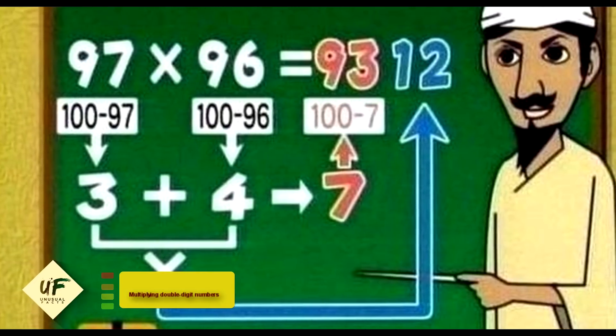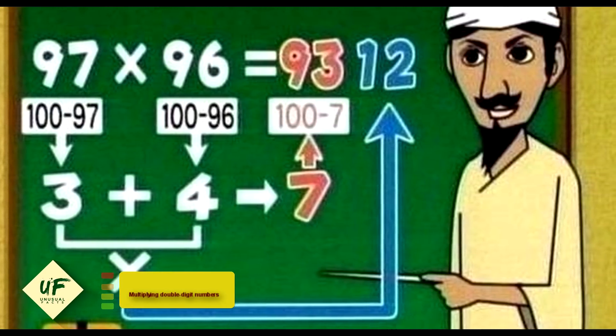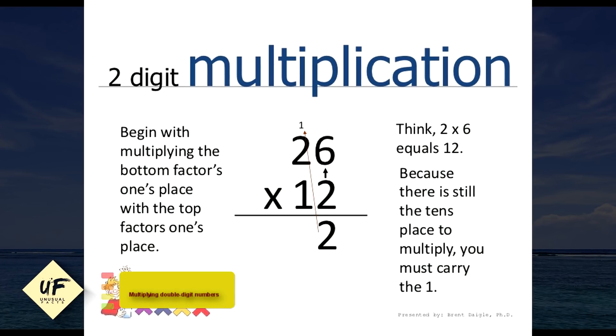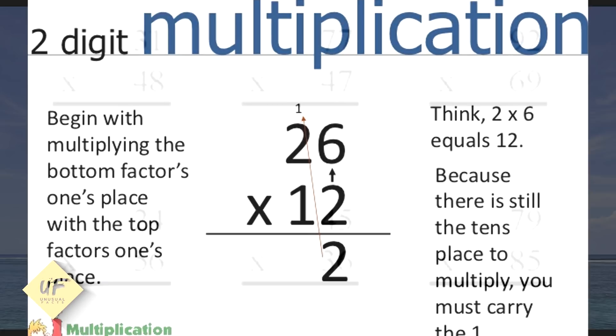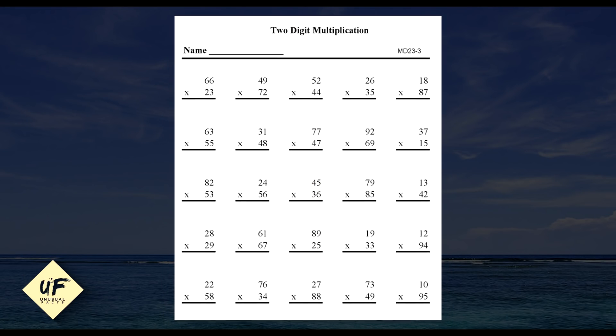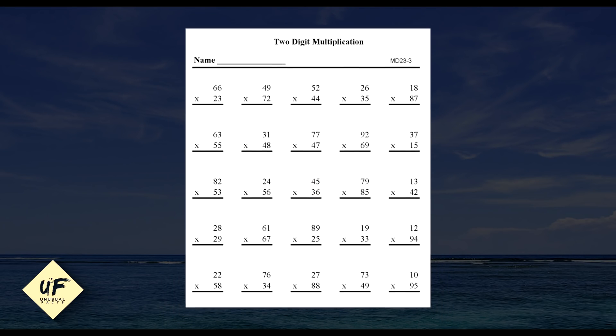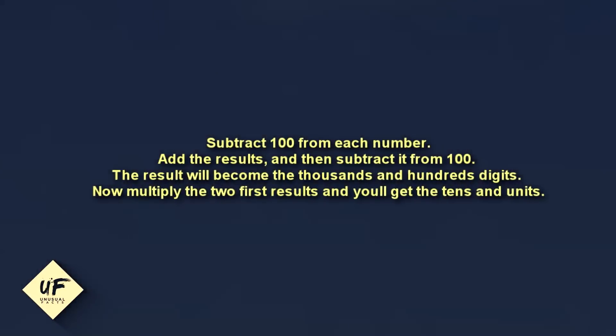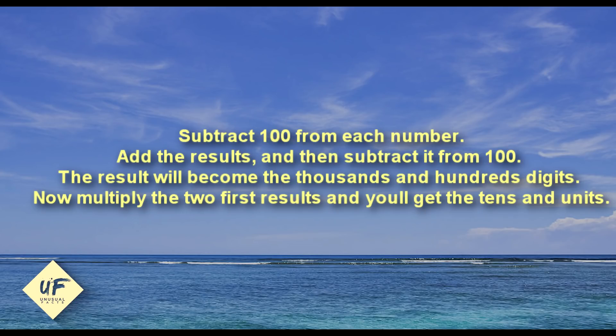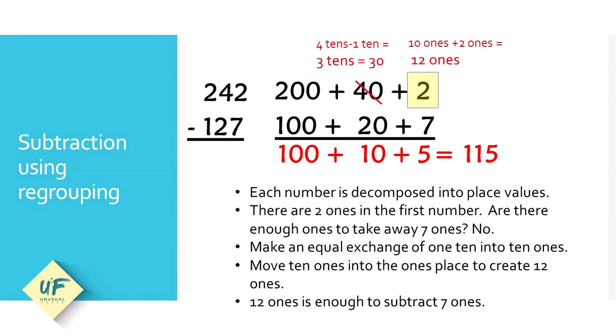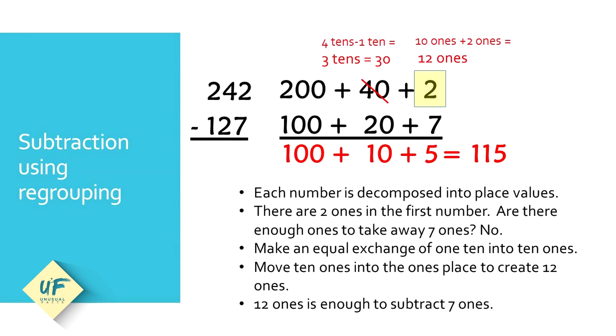Number five: Multiplying double-digit numbers. Multiplication can become harder when the numbers get bigger, but it doesn't have to be. This method will help you, and you'll find that the larger the number, the easier it gets. Here are the steps: Subtract 100 from each number, add the results, and then subtract it from 100. The result will become the thousands and hundreds digits. Now multiply the two first results and you'll get the tens and units.